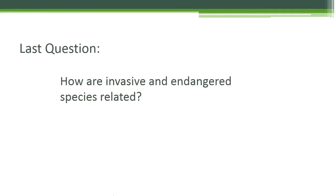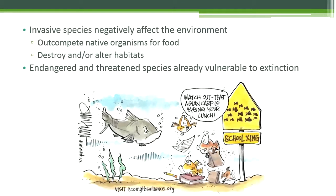To tie everything together, there's one last question: how are invasive species and endangered species related to one another? When invasive species come into a habitat, it negatively affects other species, possibly causing native organisms to become endangered or threatened. Already endangered or threatened species are even more sensitive to the negative effects of invasive species. The best method to protect endangered or threatened species from invasive species is to prevent invasive species from spreading. Don't move plants into non-native areas and never release unwanted pets or other animals into the wild.